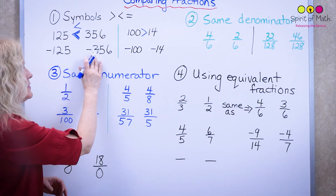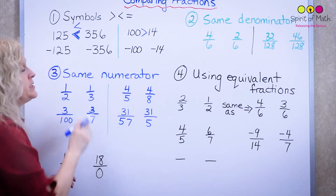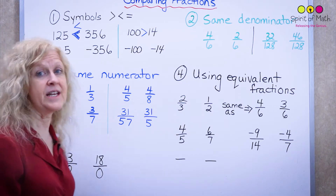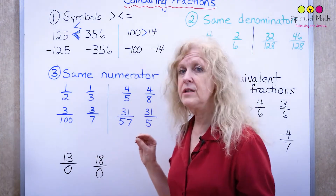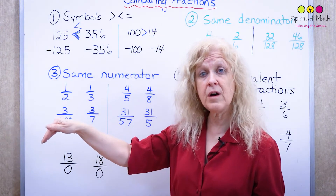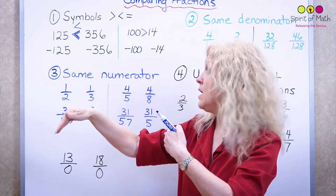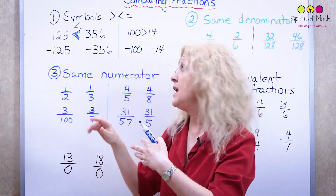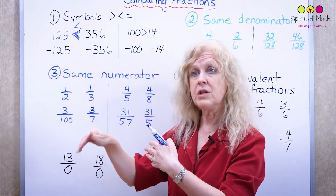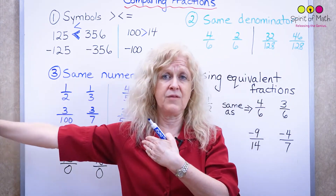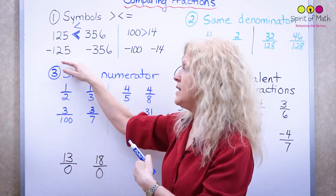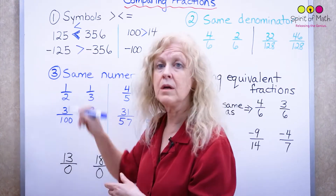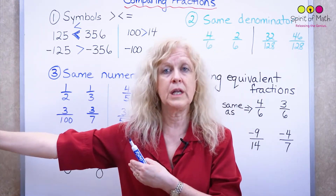Now we've got negatives: negative 125 and negative 307, and 56. If you think of negative 125, that's pretty far from zero. But negative 356 is even further to the left, so negative 356 is further than negative 125. We say that negative 356 is the smaller number because it's furthest to the left.